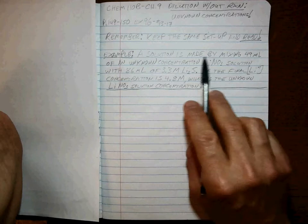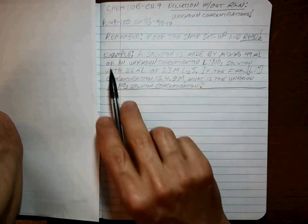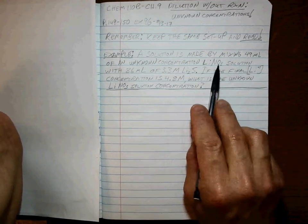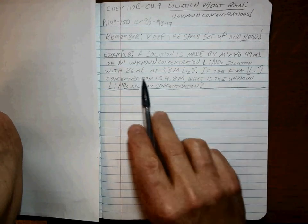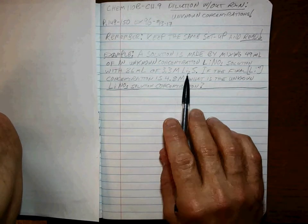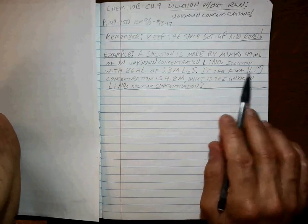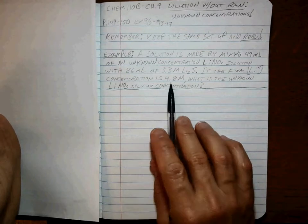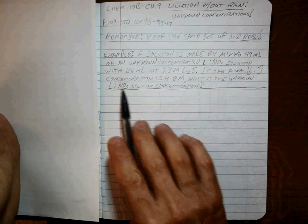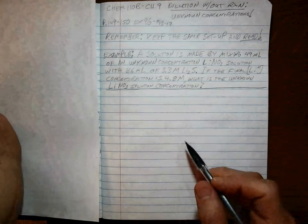A solution is made by mixing 49 milliliters of an unknown concentration lithium nitrate solution with 86 milliliters of 3.3 molar lithium sulfide. If the final lithium ion concentration is 4.8 molar, what is the unknown lithium nitrate solution concentration?